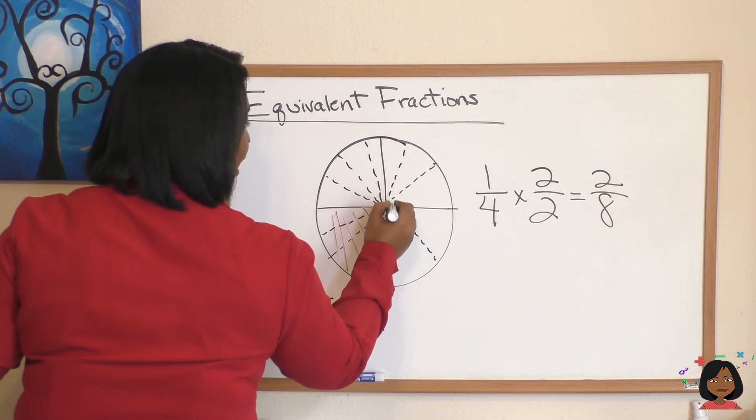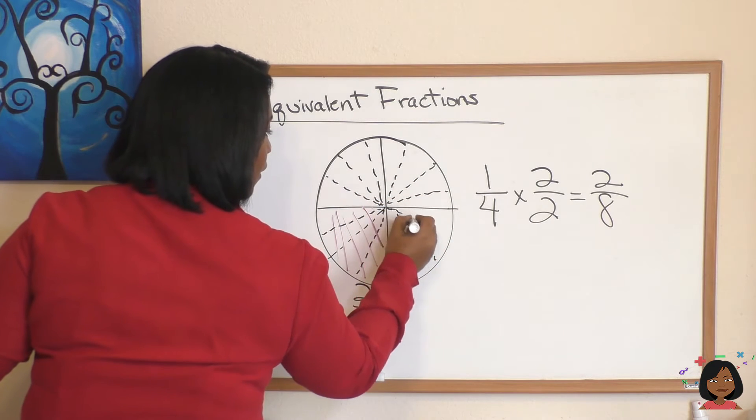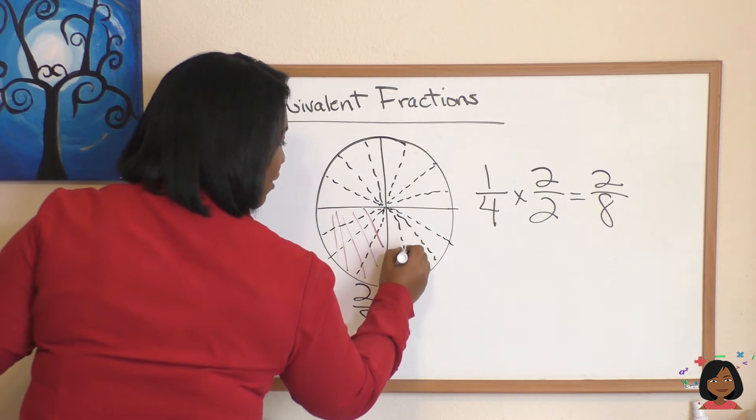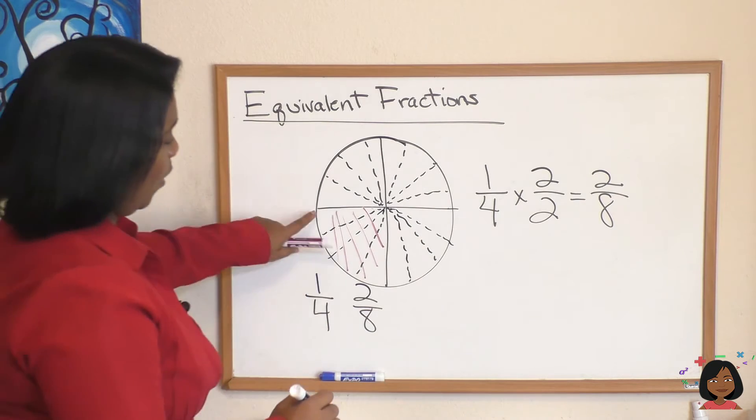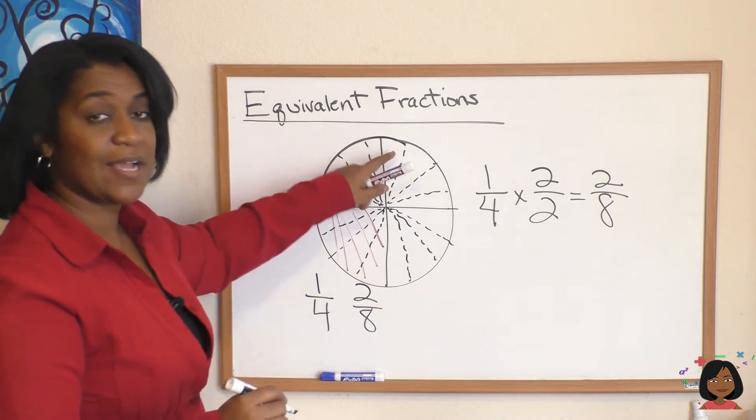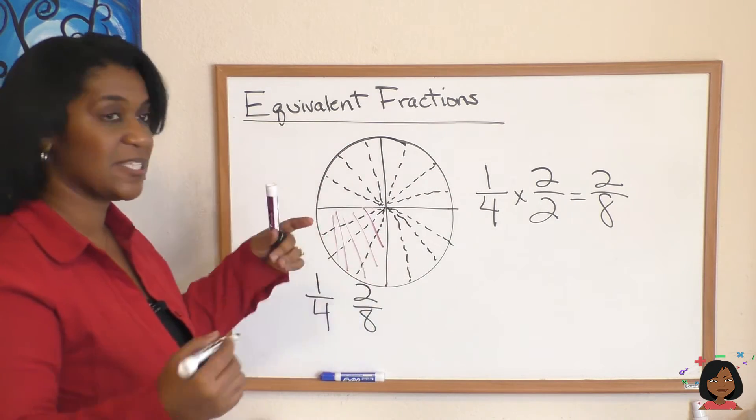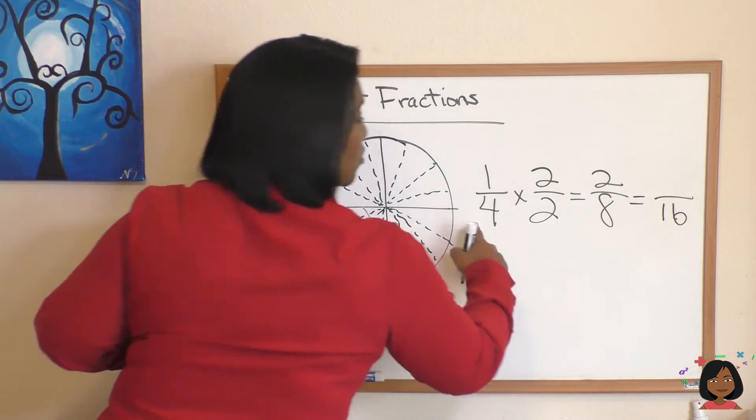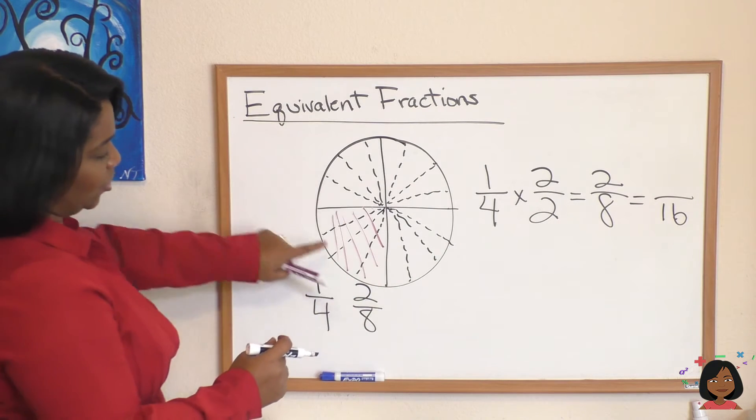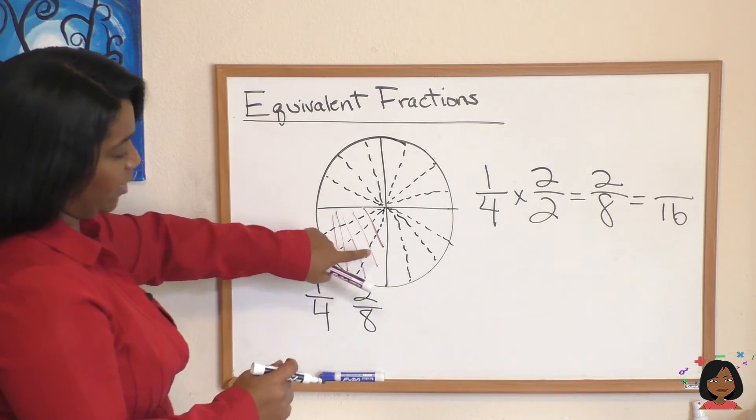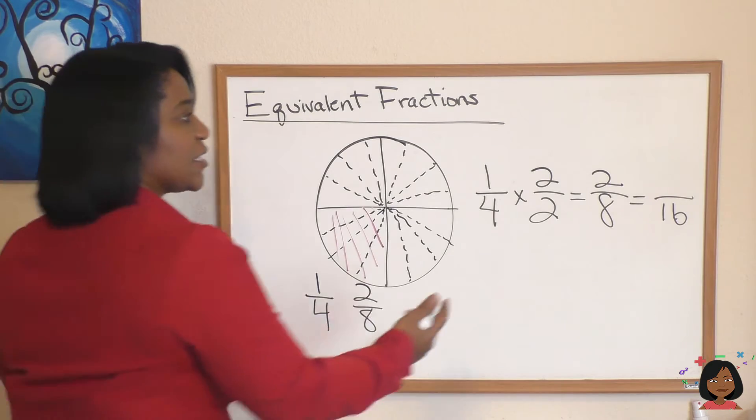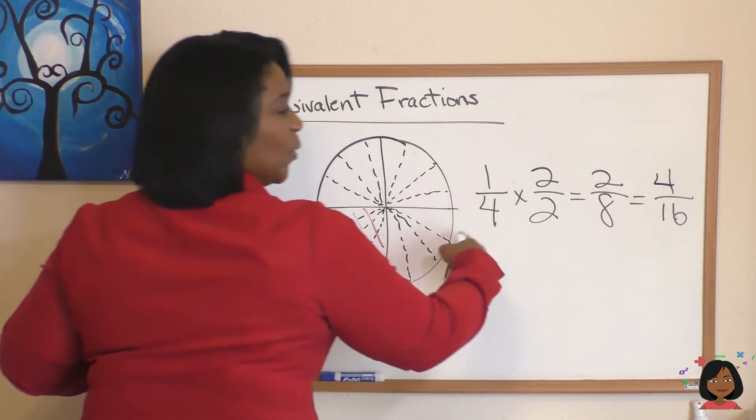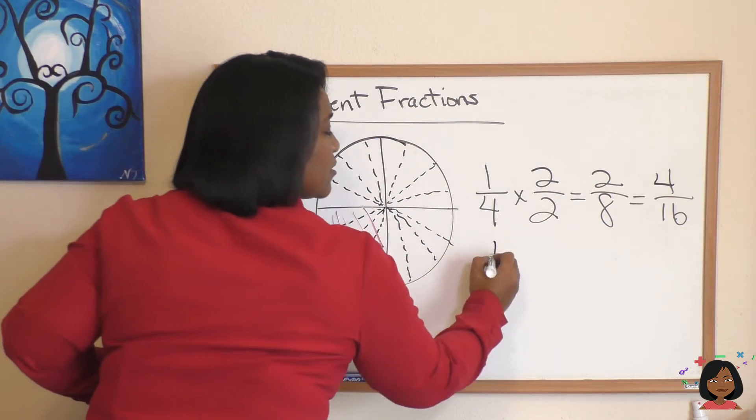How many pieces do we have now? One, two, three, four, five, six, seven, eight, nine, ten, eleven, twelve, thirteen, fourteen, fifteen, sixteen. So before it was one-fourth, but now this one section is one, two, three, four out of the sixteen.